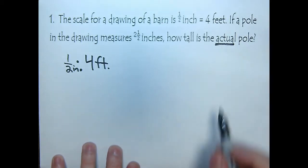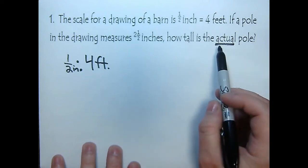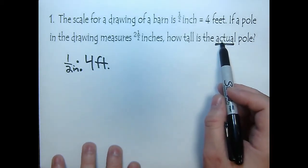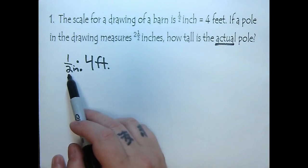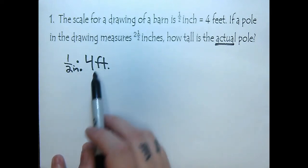This is the key. In your question, we want to figure out what we're looking for, and that needs to go in our numerator. So if we're looking for the size of the actual pole, we look back at our ratio and say one half inches to four feet.